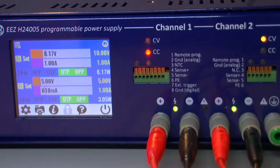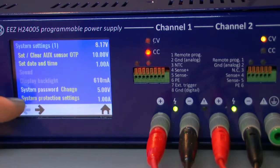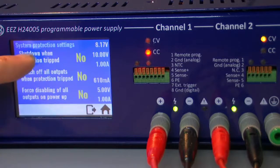And it could be interesting in the case that any of those protections tripped on one channel or both of them or whatever, the complete unit is shut down. That is possible to define by going in system settings. And under system protection settings we have shut down when protection tripped.